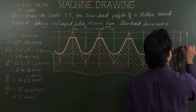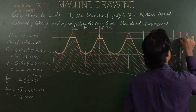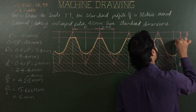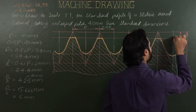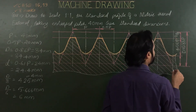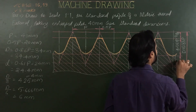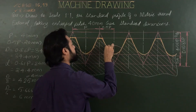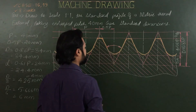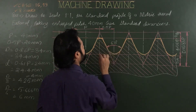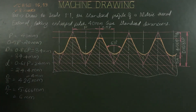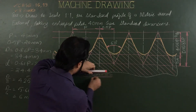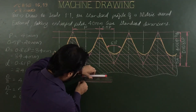Capital D equals 0.86 of P. Also dimension D by 8 and D by 6. The angle between flanks is 60 degrees. Next, please draw a table for the standard dimensions.